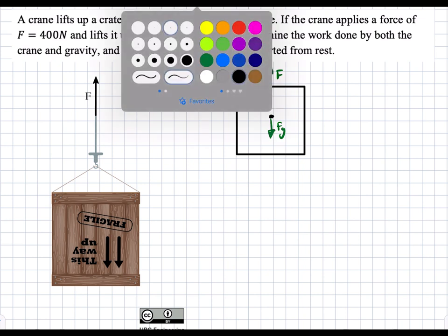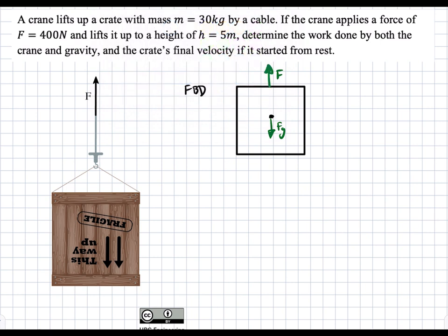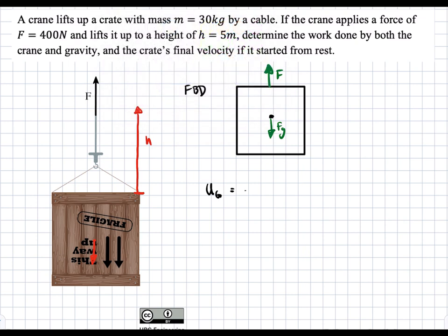We're asked to find the work done by gravity first. The work done by gravity, we're going to call it Ug, is just going to be the force due to gravity times the distance that it has traveled. And since the distance traveled and the force due to gravity are in opposite directions, it's going to have a negative sign. So this block travels a distance H upward, while gravity points downwards, so we get a negative sign: negative Fg times H, which equals negative MGH.